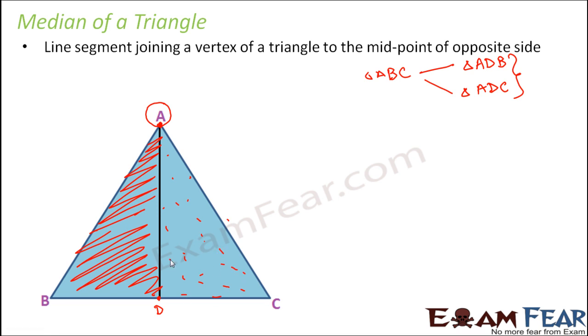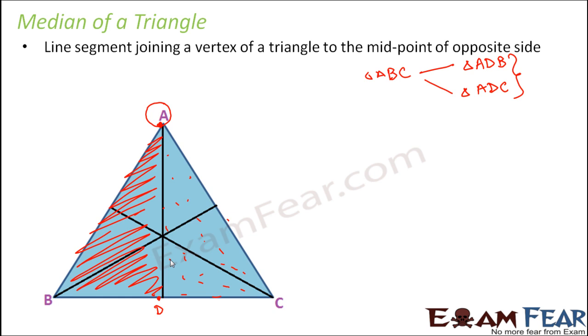Now looking at this concept of median, can you tell me maximum how many medians can be present in a triangle? Now how many vertices do we have in a triangle? We have three vertices. We cannot have more than three vertices in a triangle. Now every median has to start from a vertex, right? So for example, one median can be drawn from point A, similarly one median can be drawn from vertex B, another median can be drawn from vertex C. Therefore, a total of three medians can be drawn in a triangle.